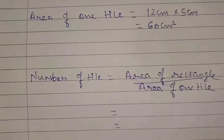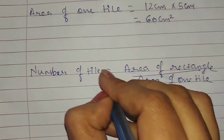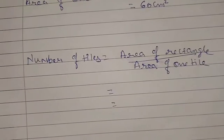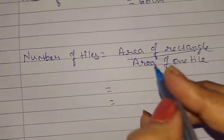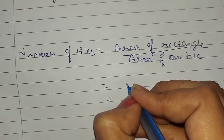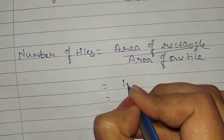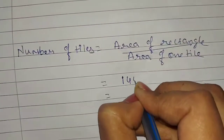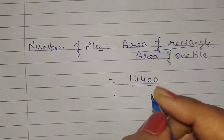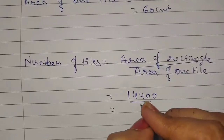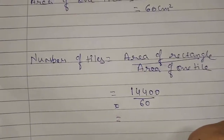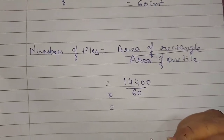We have to find the number of tiles. Number of tiles equals area of rectangle divided by area of one tile. That is 14,400 cm square divided by 60 cm square. Reducing this fraction, we find the number of tiles needed is 240 tiles.